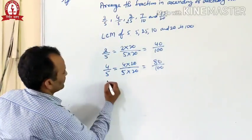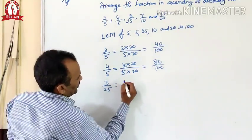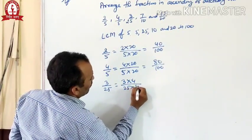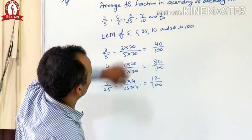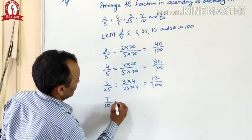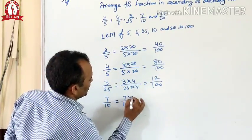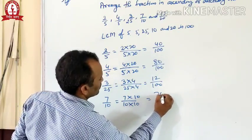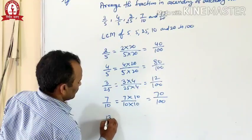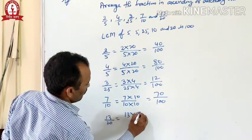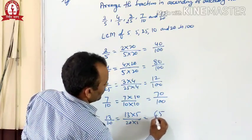Our third fraction is 3 by 25. To convert 25 into 100, we multiply both numerator and denominator by 4. Our fourth fraction is 7 by 10 — multiply both numerator and denominator by 10 to get the equivalent with denominator 100. Our next fraction is 13 by 20, and its equivalent is 65 by 100.